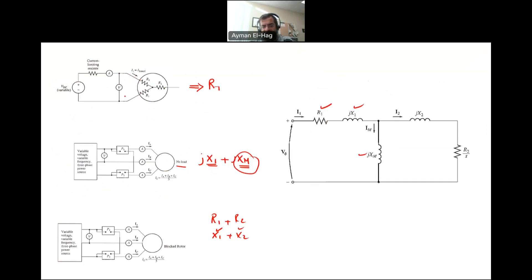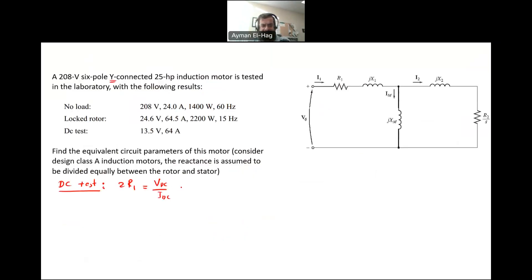We assume we have identical windings, so each resistor is exactly the same. This equals 13.5 divided by 64. From this, R1 equals 0.105 ohms.